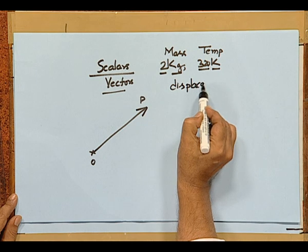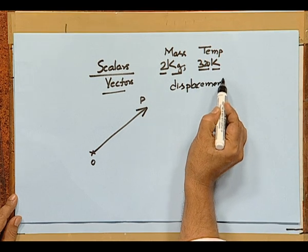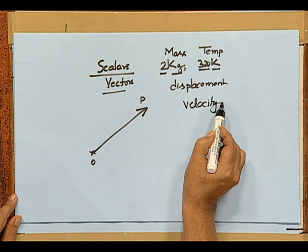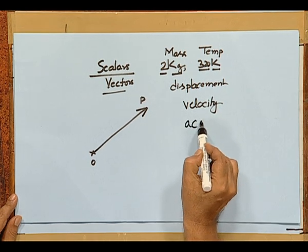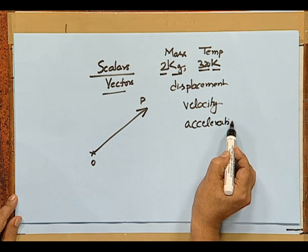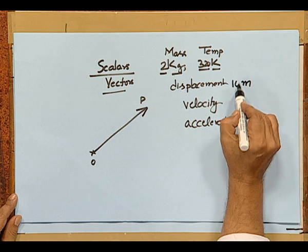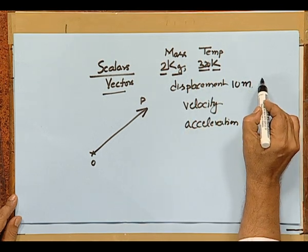There are quantities in physics called vectors, which are represented not only by a certain magnitude — for example, displacement, velocity, and acceleration. These are quantities which need specification not only in terms of their magnitude, like 10 meters, but if you do not say in what direction, it does not mean anything.